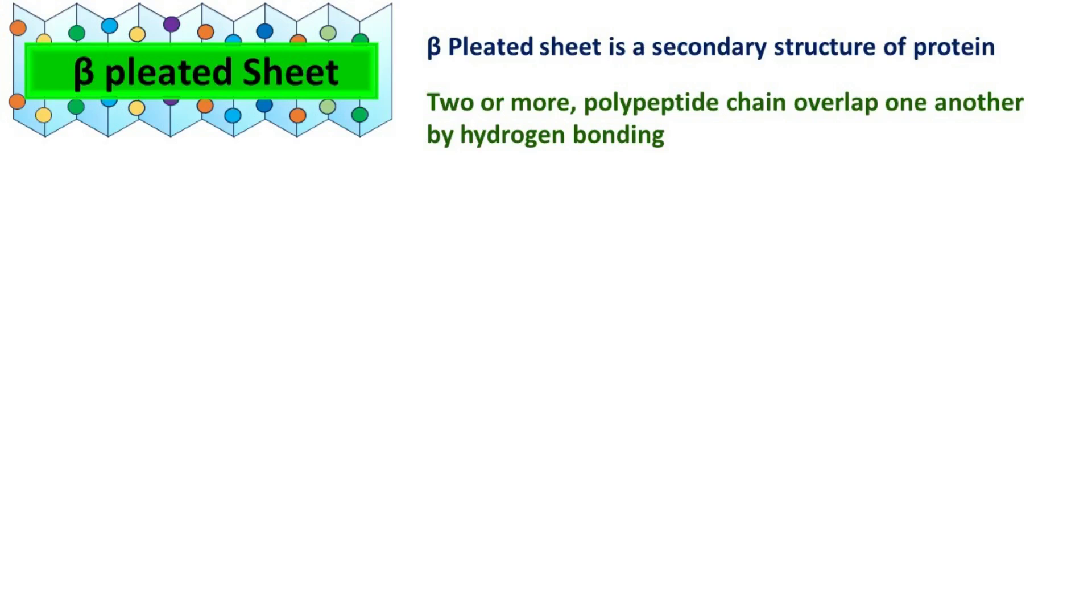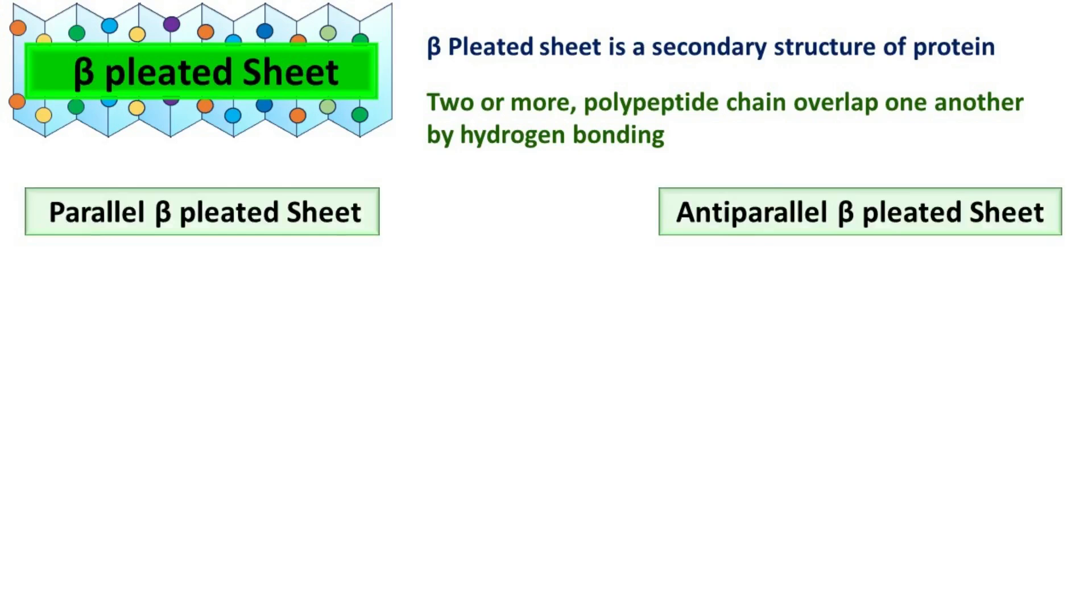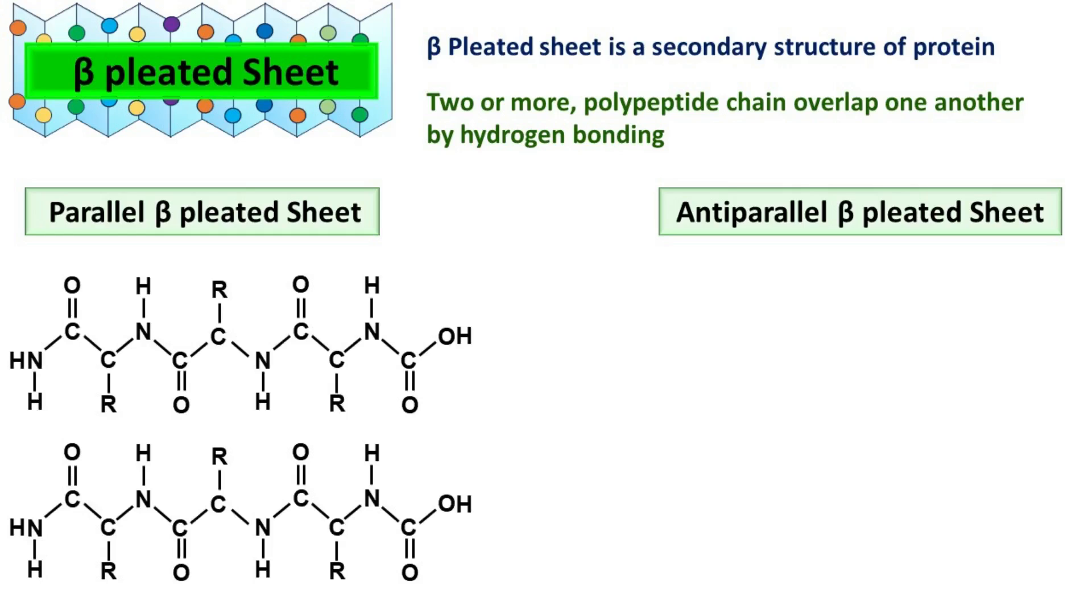The polypeptide chain may be arranged in parallel or anti-parallel way. In case of parallel arrangement, the C-terminal end of many polypeptide chains remains on the same side. In a similar way, the N-terminal end of many polypeptide chains remains on the same side.